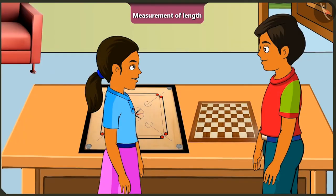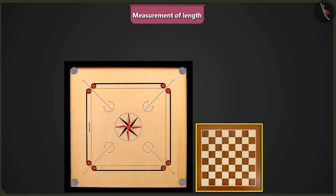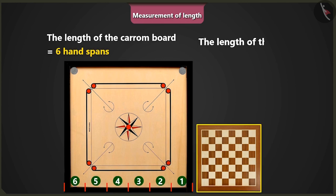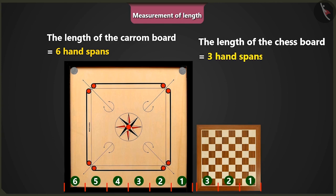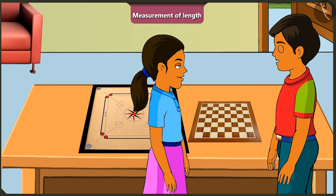Now can you determine the length of this chess board? The length of this chess board seems to be half of the carom board. The length of the carom board is equal to 6 handspans. So the chess board would be 3 handspans long. Oh wow! Absolutely correct.